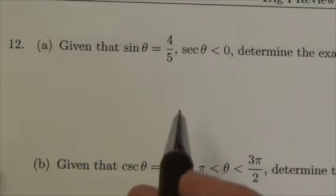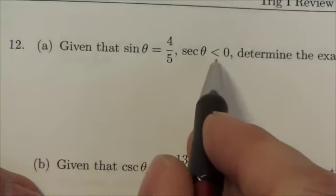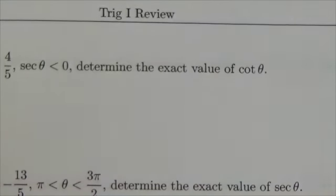Hi everyone. So this question here says that given that sine of theta is four-fifths and the secant is less than zero, determine the exact value of cotangent.